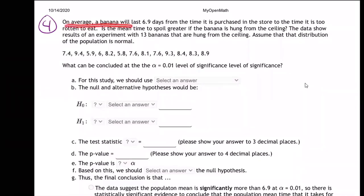All right. On average, a banana will last 6.9 days from the time it is purchased in the store to the time it is too rotten to eat.